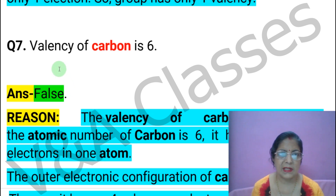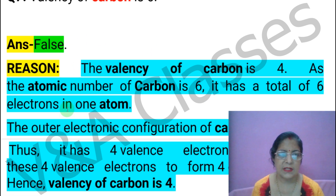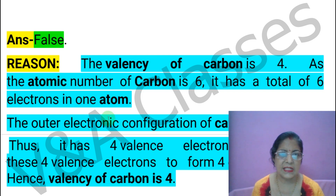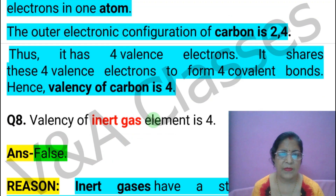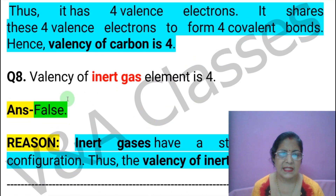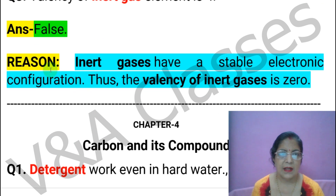Next statement: Valency of carbon is 6. This statement is FALSE. Next statement: Valency of inert gas elements is 4. This statement is FALSE.